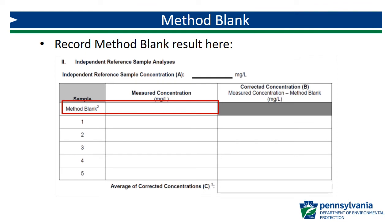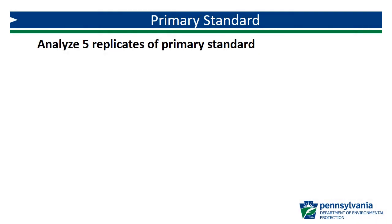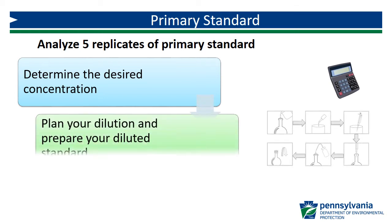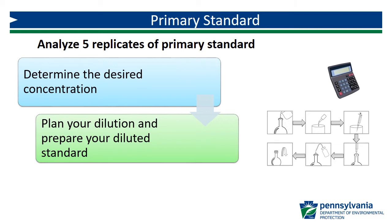Referring back to the IDC form, the method blank result is recorded here. The second step of the IDC is to analyze five replicates of a primary standard. Before you can analyze your primary standard, you have to determine what concentration you want to prepare. Then you need to plan your dilution, gather the necessary equipment, and prepare your diluted standard.